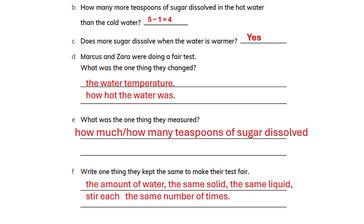Markus and Zara were doing a fair test. The one thing they changed was the water temperature. The one thing they measured was how many teaspoons of sugar dissolved. Things kept the same to make the test fair: the amount of water was the same, the same solid (sugar) was used throughout, the same liquid (water) was used, and each was stirred the same number of times.